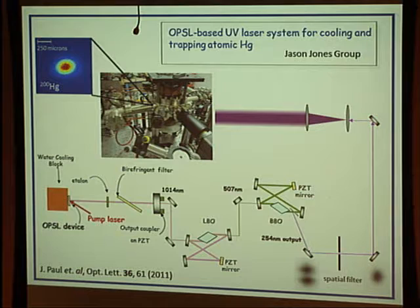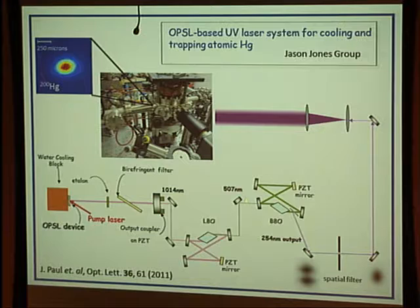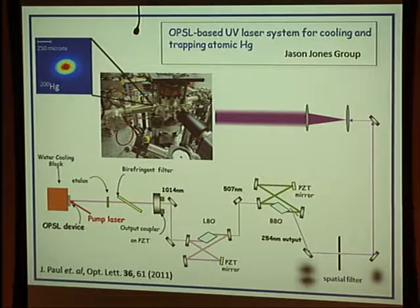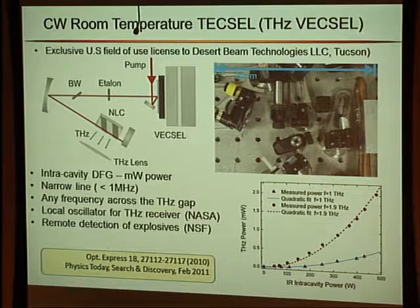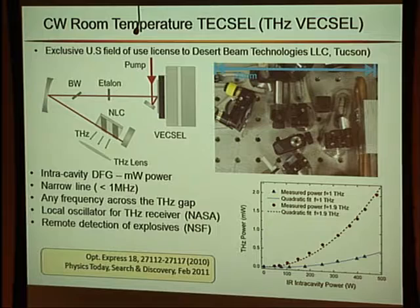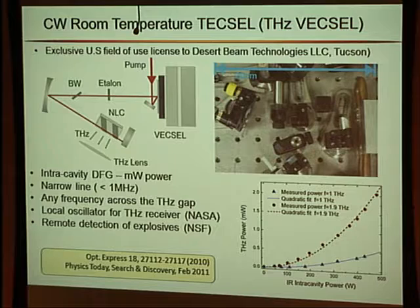Jason Jones' group used these VECSEL chips through two sequences of frequency doublings: starting at 1014 nm, down to 507 nm, then to 254 nm to match the mercury transition — successfully used to build a mercury trap. A very nice spin-off is intracavity terahertz generation: by placing a periodically-poled lithium niobate crystal in the cavity and running dual wavelengths separated by the terahertz frequency using a thin 100-micron etalon, we demonstrated about 2 milliwatts at 1.9 THz at room temperature. The device is highly tunable by tilting the etalon.